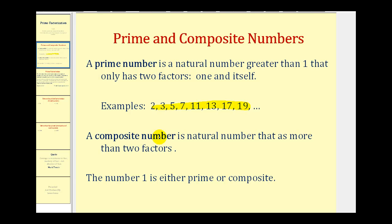A composite number is a natural number that has more than two factors. For example, the number fifteen has four factors, since one times fifteen equals fifteen and three times five also equals fifteen. So the factors of fifteen are one, three, five, and fifteen — four factors, which is more than two, therefore fifteen is a composite number. One special note: the number one is neither prime nor composite by definition.